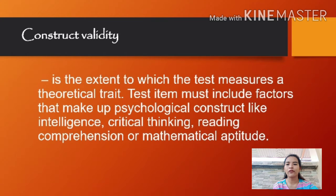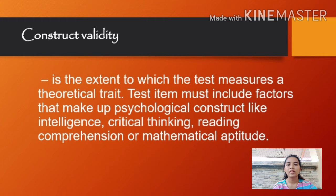The last type of validity is construct validity. It is the extent to which the test measures a theoretical trait. Test items must include factors that make up a psychological construct, like intelligence, critical thinking, reading comprehension, or mathematical aptitude.